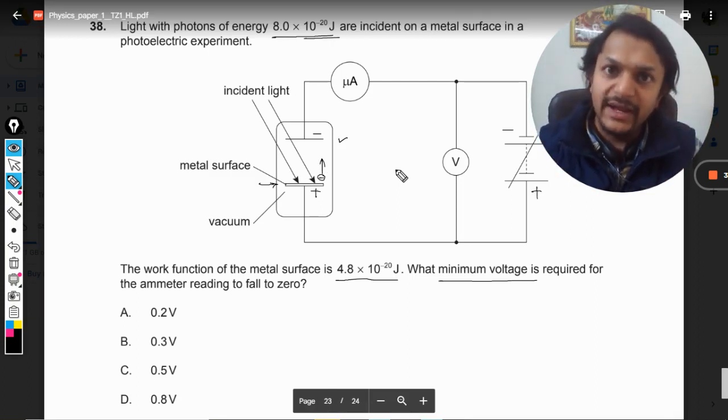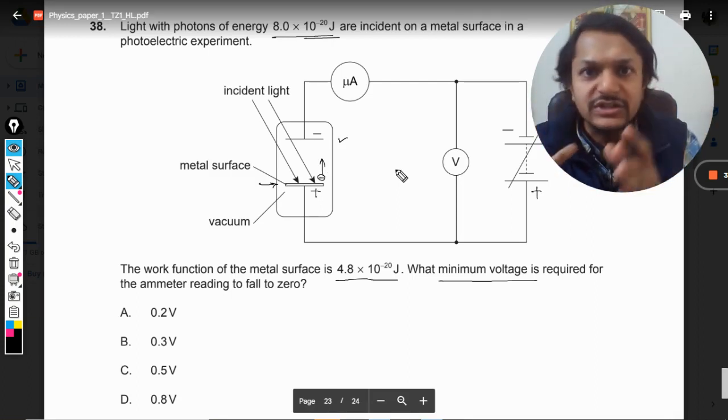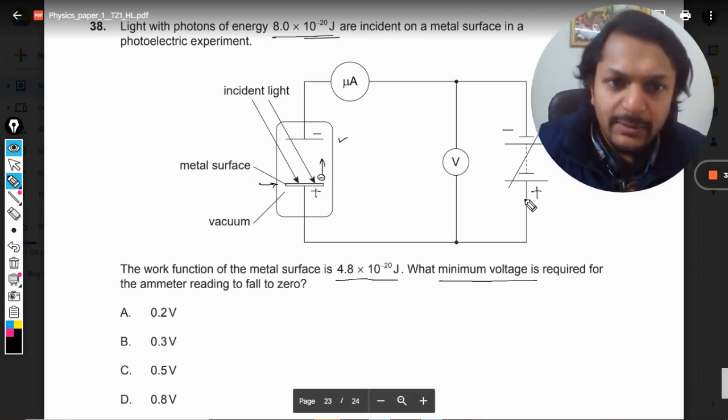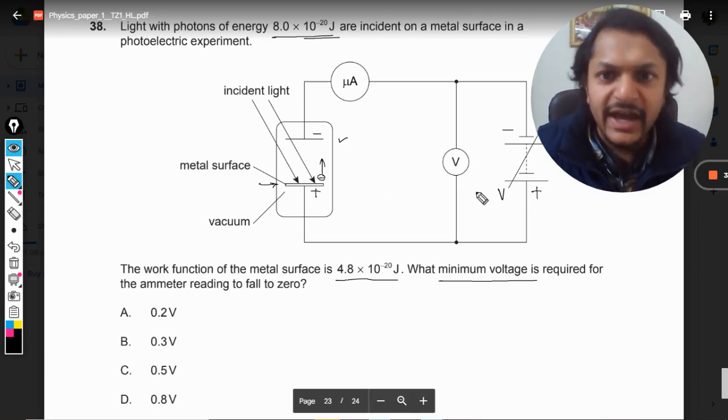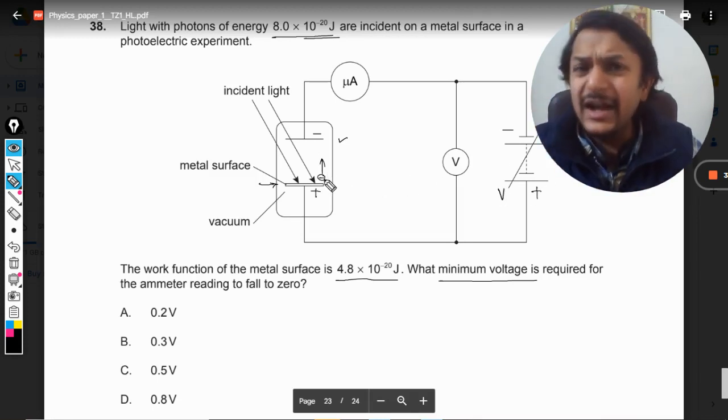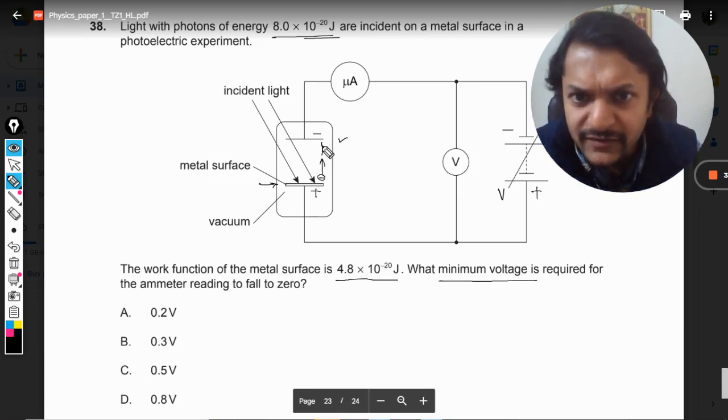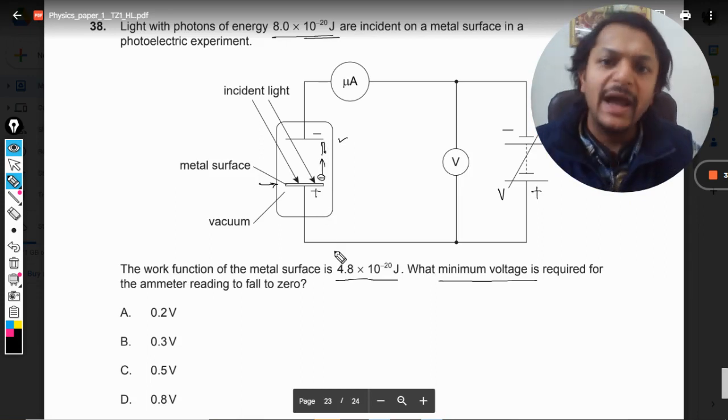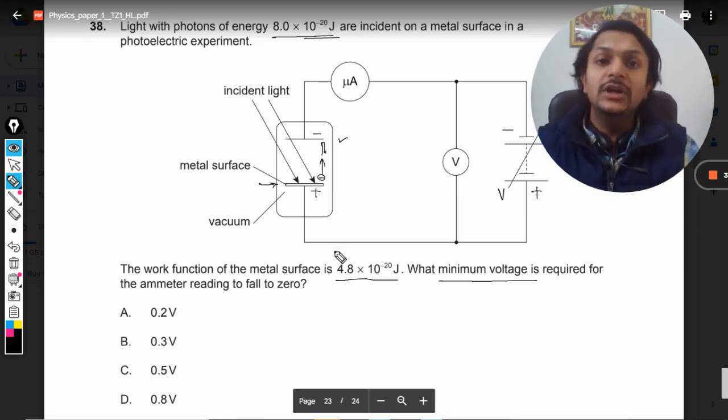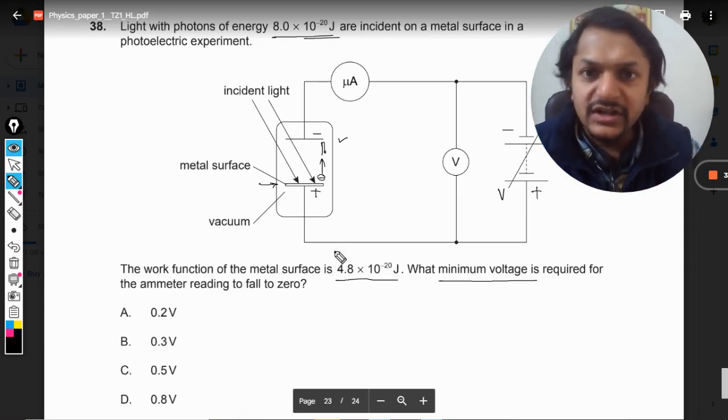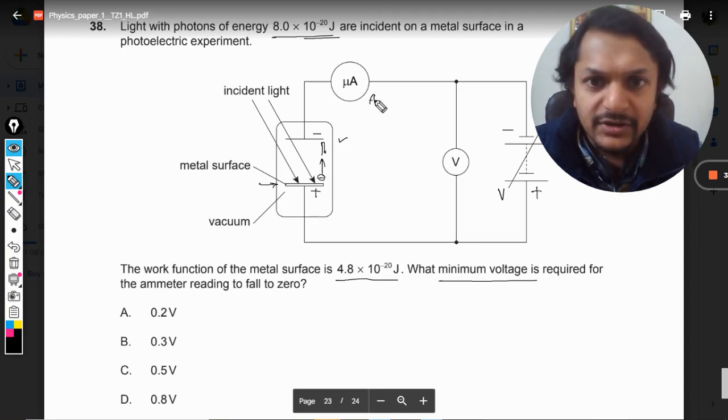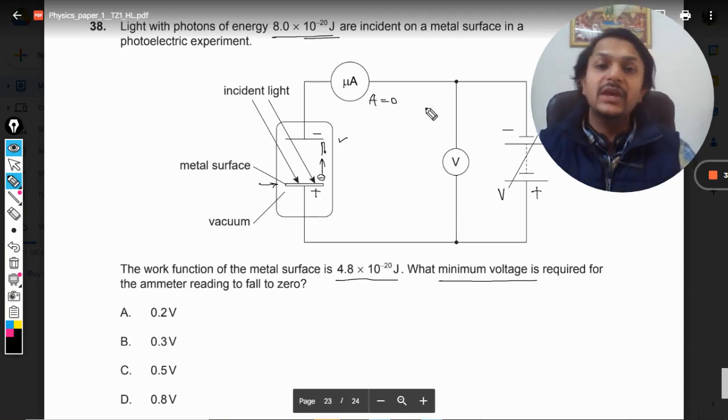So lesser number of electrons will be able to reach the second plate, so current will now start decreasing. But there will be a certain value of V at which the last electron—the electron with the maximum kinetic energy—will go and it will just come back.